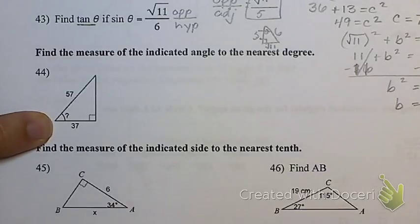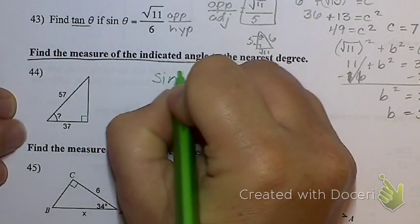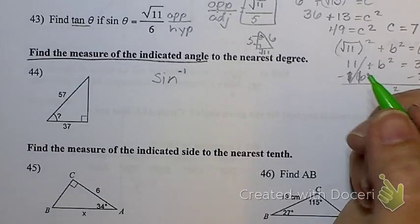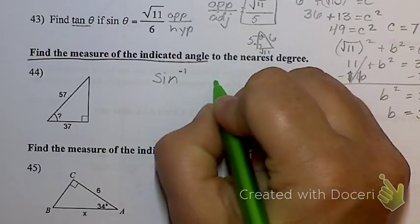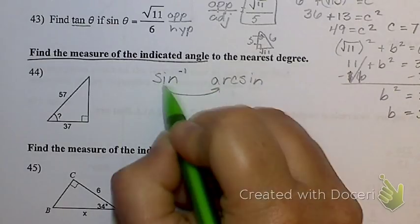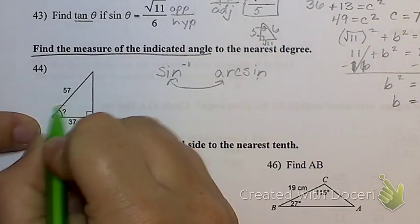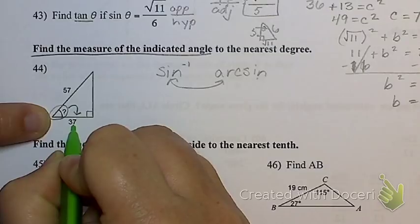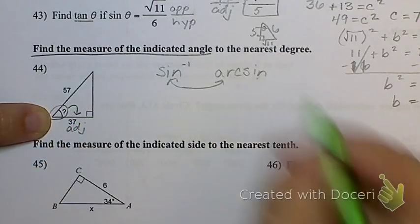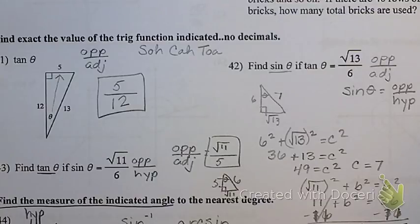Find the measure of the indicated angle. Anytime you are finding the measure of an angle, you're going to have to use shift sine or shift cosine — sine to the negative 1, cosine to the negative 1, or tangent to the negative 1. On some calculators it is called arc sine, arc cosine, or arc tangent. Those two things are interchangeable. I'm looking for this angle. They are giving me 37 as adjacent and 57 as the hypotenuse. What part of SOHCAHTOA uses adjacent and hypotenuse? Cosine.